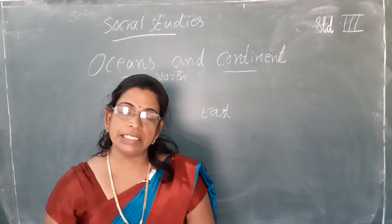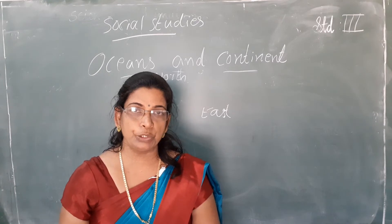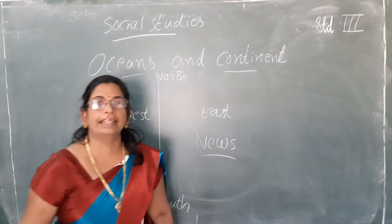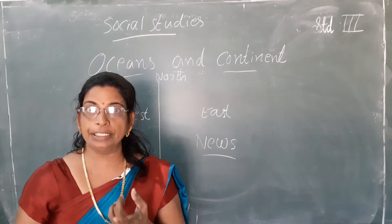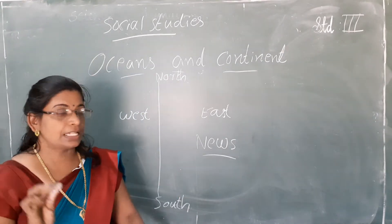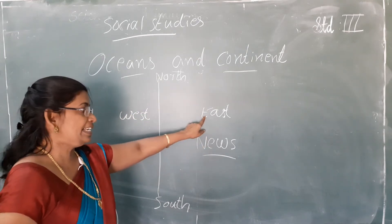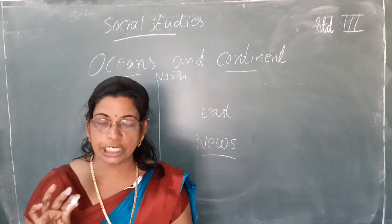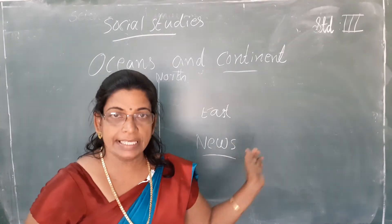In order to remember the four directions very easily, I will tell you an easy way. You might have seen the letters N-E-W-S. Early morning we read the news or watch the news — that word NEWS comes from these four directions. N stands for North, E stands for East, W stands for West, and S stands for South. To remember these four directions, remember the word NEWS and from those four letters you will know the names of the directions.